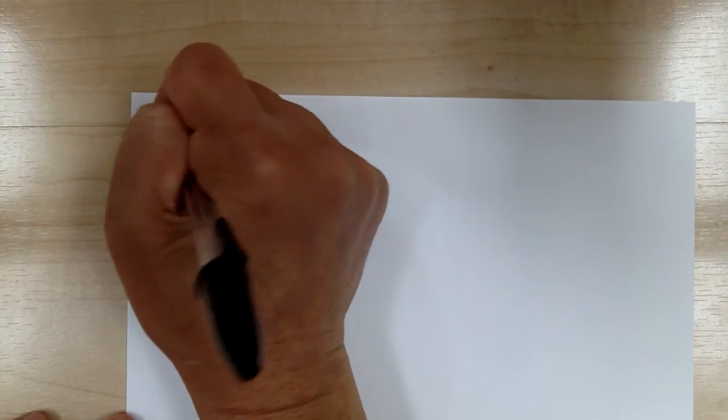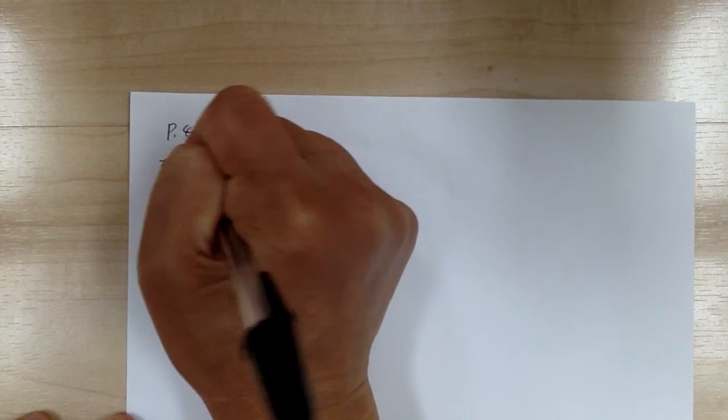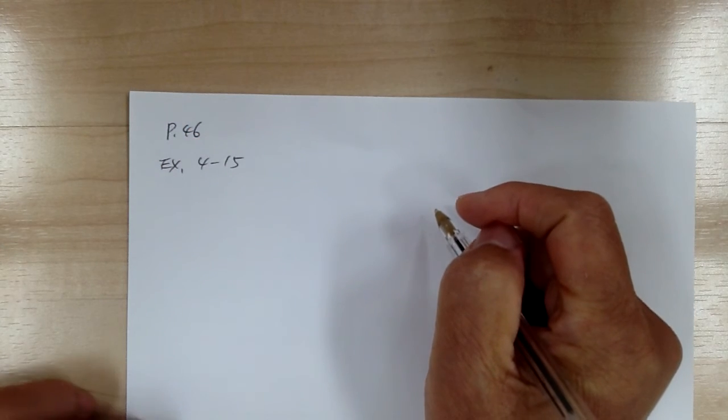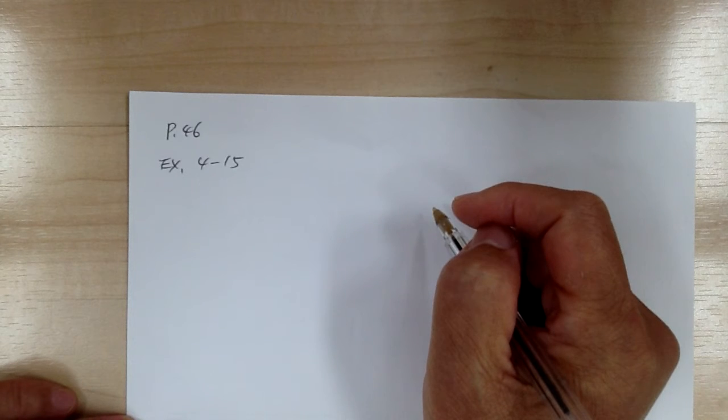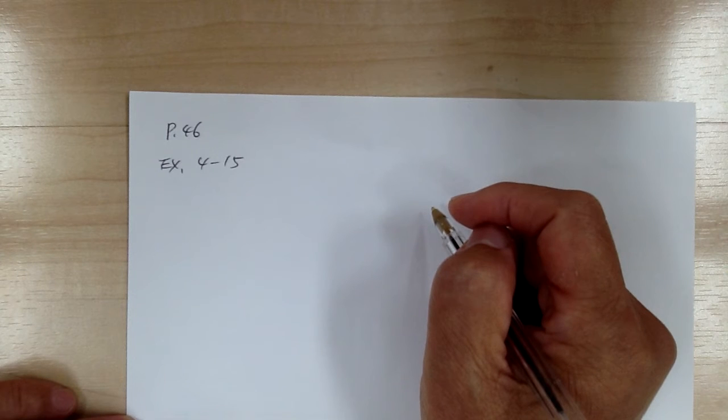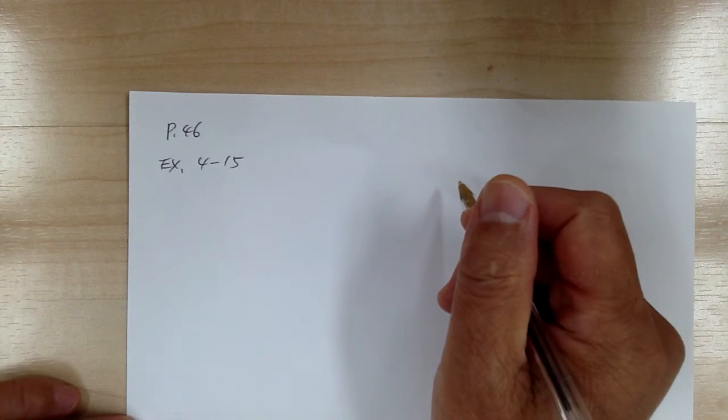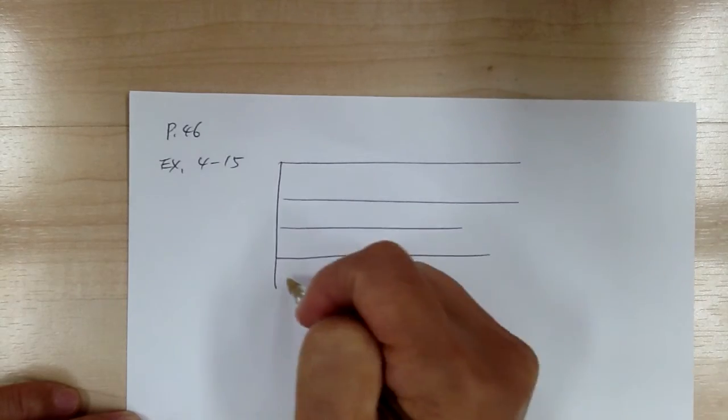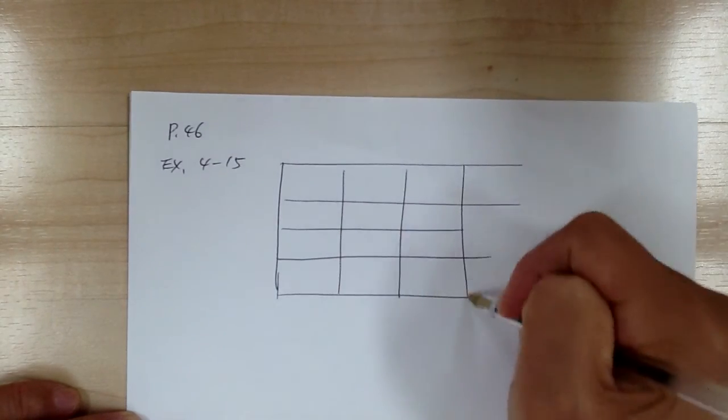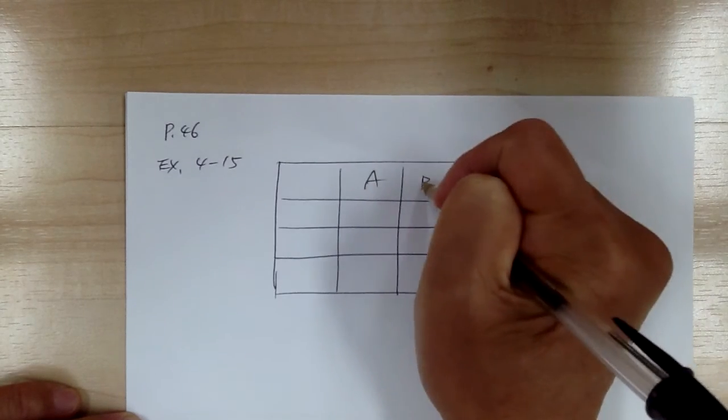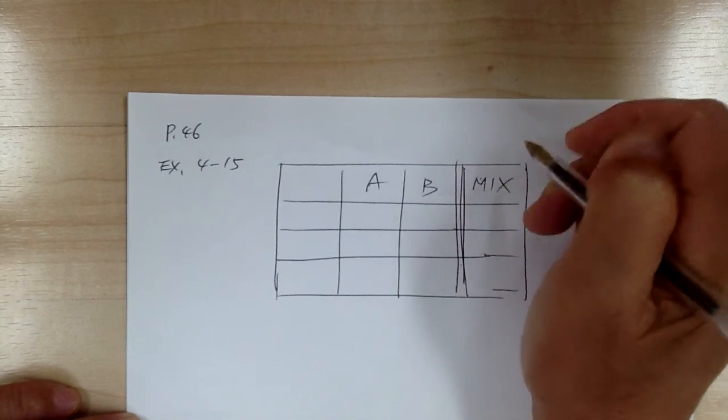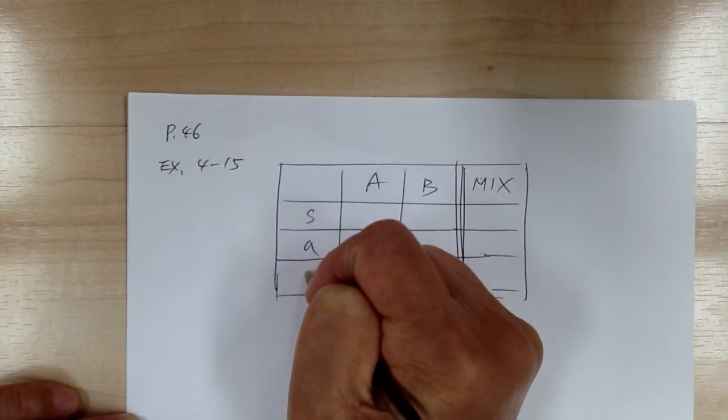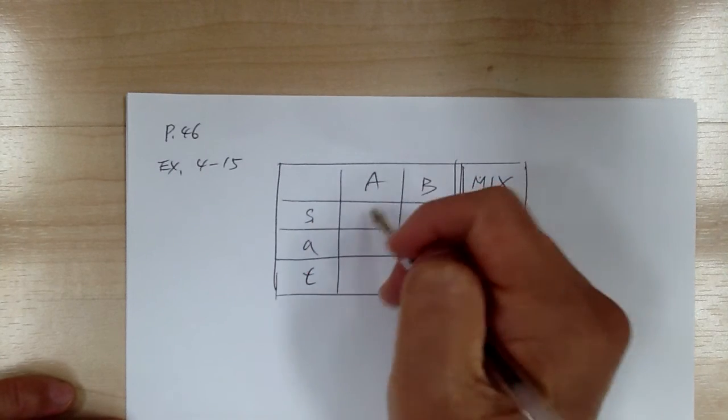Let's go to example 4-15. So example 4-15 is a mixture problem. 2 liters of 20% acid solution are mixed with 8 liters of 50% acid solution. What is the concentration of the resulting solution? So whenever it's a mixture problem, it's easier to do when you keep track of different components. So you have the A, B and you have the mix over here. And you have the S, A, T. So S is strength. And I'm just going to drop the percent. Because if you just be consistent, you'll be okay.